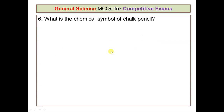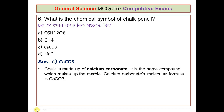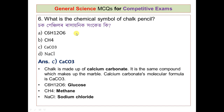What is the chemical symbol of chalk? The options are C6H12O6, CS4, CaCO3, and NaCl. Chalk is made up of calcium carbonate — the same compound that makes up marble. Calcium carbonate's molecular formula is CaCO3. C6H12O6 is glucose, CH4 is methane, and NaCl is sodium chloride (table salt).